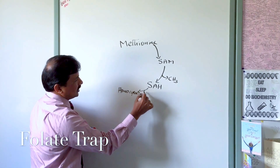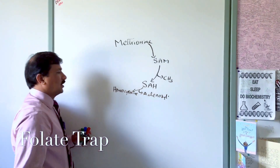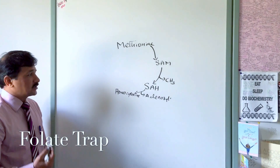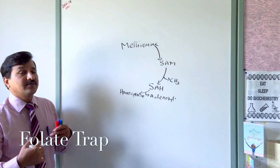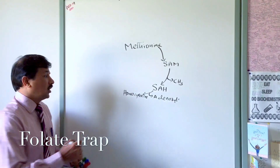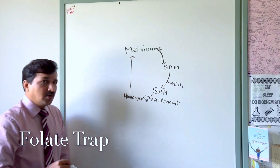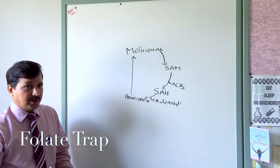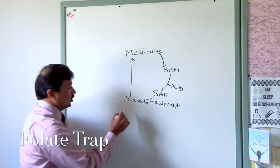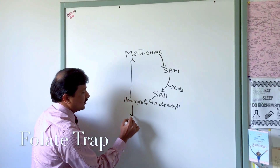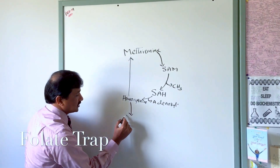Once the methyl group is donated, S-adenosyl methionine is converted to S-adenosyl homocysteine. S-adenosyl homocysteine is then converted to homocysteine once the adenosyl group is removed. Homocysteine has two fates: if the demand for methionine in the cell is high, homocysteine can be converted back into methionine; or if the demand for cysteine is more, homocysteine can be converted into cysteine.